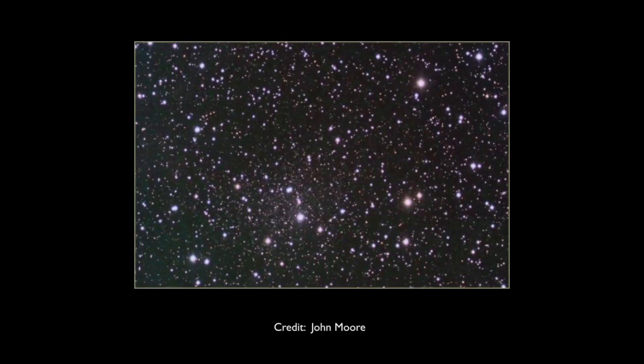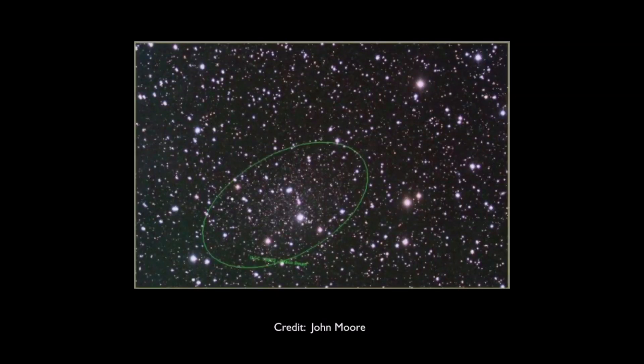Believe it or not, there is a dwarf galaxy hidden in this image. Can you see it? Here it is — you can barely make out an overdensity of stars where I've drawn the ellipse. This is the Draco dwarf galaxy. In fact, the dwarf galaxies that the astronomy community has been discovering in the last decade are even fainter than this one. Because they're extremely faint, it's useful to have another method of hunting for them that doesn't rely on the amount of light that they emit.